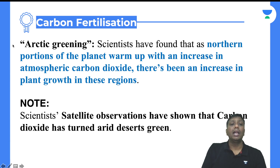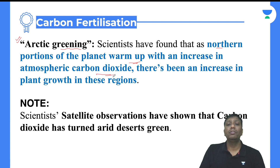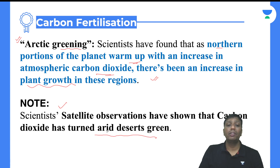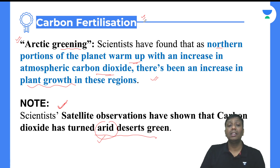Some reports published about the Arctic show that in the Arctic areas, which are colder areas toward the northern portion, these regions are getting warmer. Atmospheric carbon dioxide is rising, and so it is possible that plant growth in these areas will increase, and Arctic areas can become more productive and greener. Even satellite observations have shown that carbon dioxide has turned arid deserts green — areas where water availability is very less.